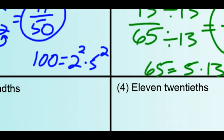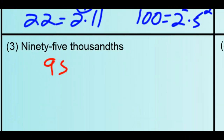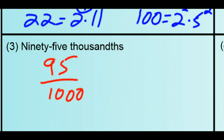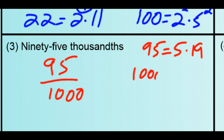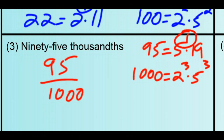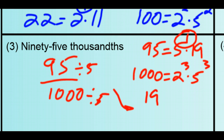For number 3, 95 over 1,000: let's look at the prime factorization to find the GCF. 95 is 5 times 19, and 1,000 is 2 cubed times 5 cubed. The only thing they share is one 5 — 1,000 has many 5s, but you can only share 1 with 95. Divide both numerator and denominator by 5 and end up with 19 over 200.